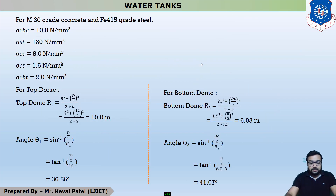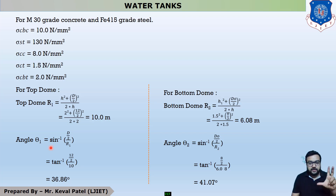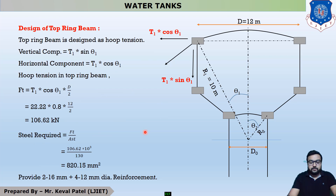In the last-to-last lecture, whenever angle theta1 was found, the equation in the PPT used tan inverse. You have to replace sin inverse with tan inverse, because sin theta1 = (d/2) / r1. The same calculation mistake applies for theta2. Now moving further to the design of the top ring beam.